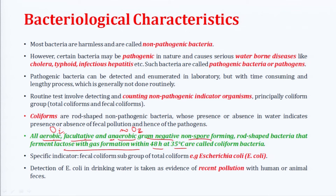A very commonly used indicator of fecal coliform, a subgroup of total coliform, is E. coli. Detection of E. coli in drinking water is taken as evidence of recent pollution with human or animal feces. If I have a sample of water and I test for E. coli and it is present, I will say this water has seen recent fecal pollution and it is not supposed to be drunk — we will reject it.